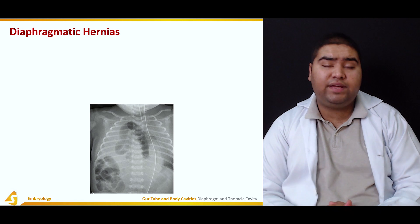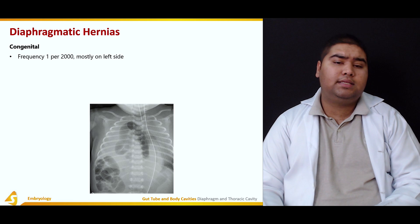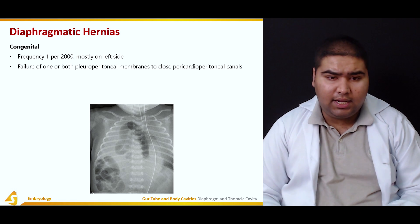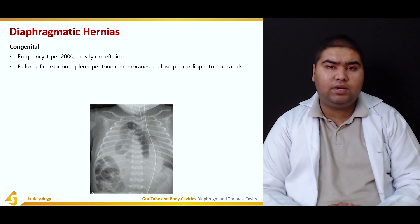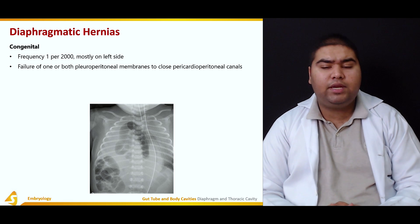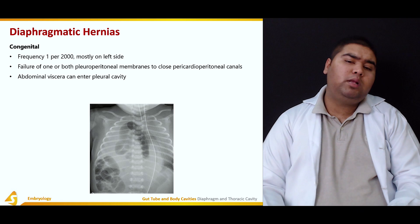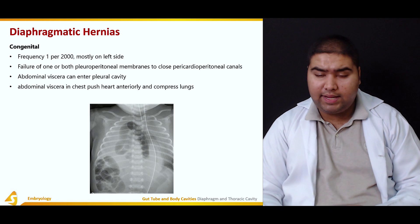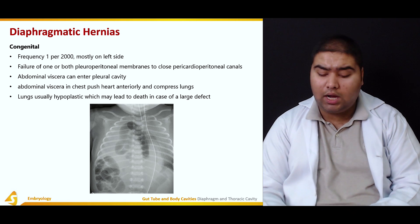Defects in the process of diaphragm formation are commonly known as diaphragmatic hernias. Congenital diaphragmatic hernia has a frequency of 1 per 2,000 and is mostly on the left side. It is due to failure of one or both pleuroperitoneal membranes to close the pericardioperitoneal canals. The abdominal viscera can enter into the pleural cavity, push the heart anteriorly, and compress the lungs. The lungs are usually hypoplastic and not formed properly, which may lead to death in case of a large defect.